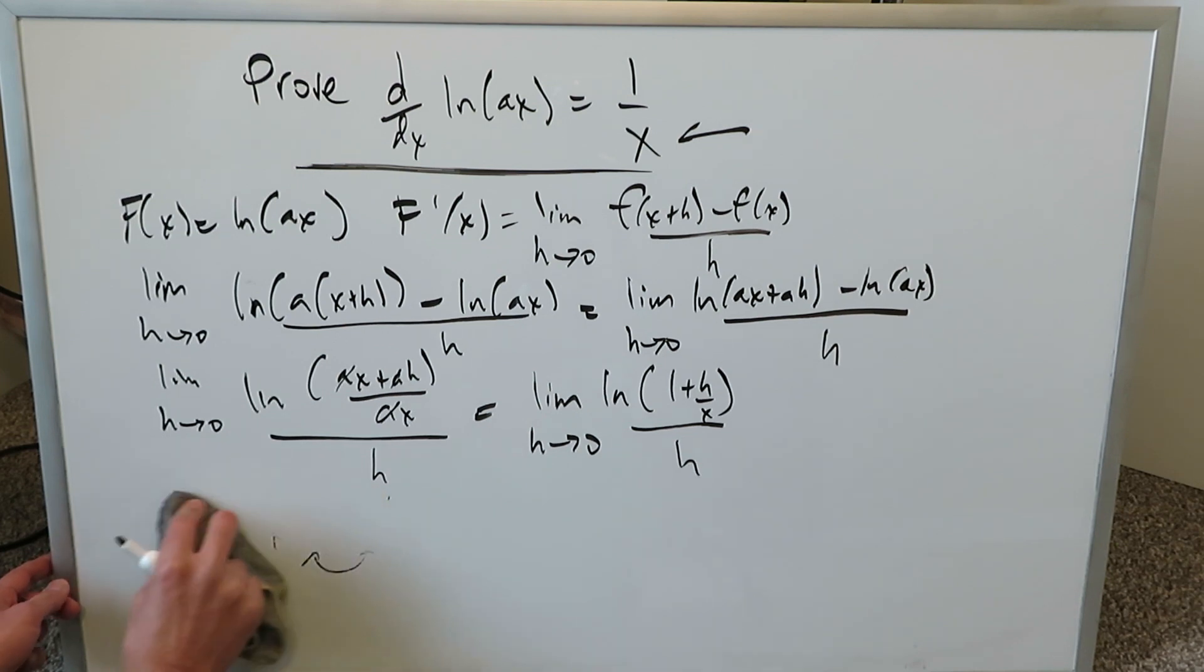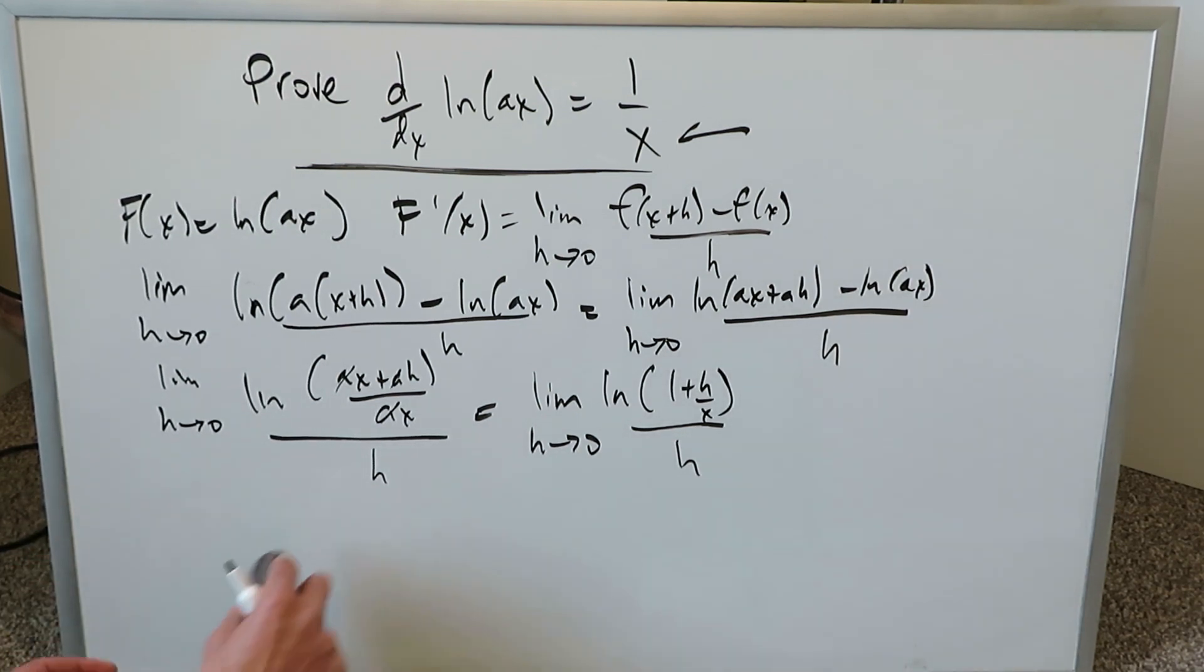We do a very essential substitution over here which will help bring everything home. If u is equal to h over x. You see this h over x? Then h is equal to ux, right? If we're making a substitution u is equal to h over x, then we can solve for that h and take the x on the other side. We end up having two substitutions come out from 1.